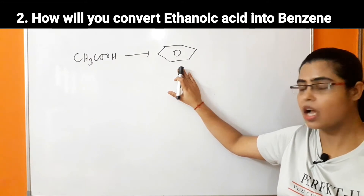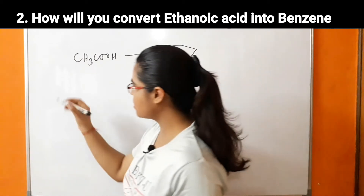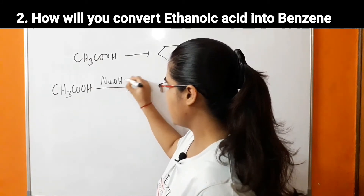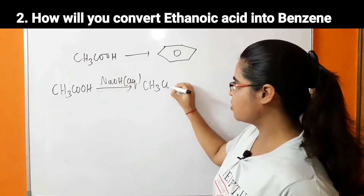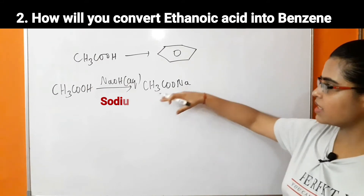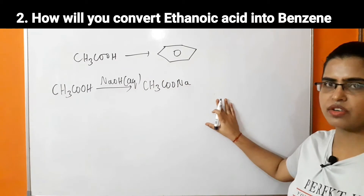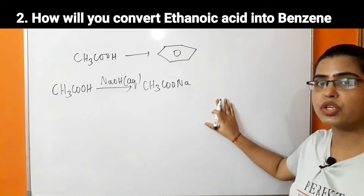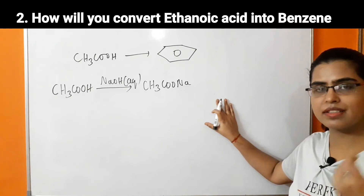Let's see how acetic acid will be converted into acetylene. If we react this compound with aqueous NaOH, there will be formation of CH₃COONa — this is sodium acetate. By the formation of this sodium acetate, we can do a decarboxylation reaction. In decarboxylation, there is removal of CO₂.